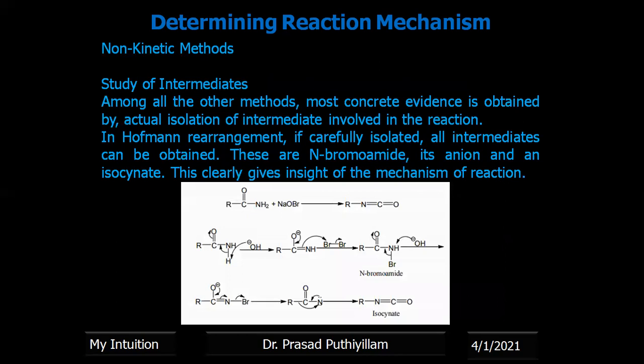The second method is the study of intermediates. Among all possible methods, this is one of the best and most convincing methods, since if we can separate the intermediate formed, it is easy to propose the reaction mechanism. One example is Hofmann rearrangement, in which almost all intermediates can be isolated. Based on the intermediate formed, we can finalize and suggest the reaction mechanism for product formation.